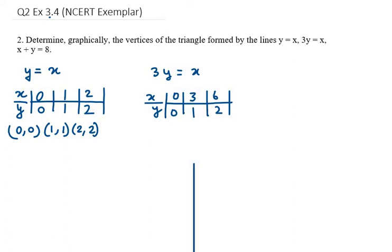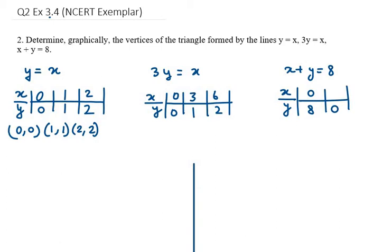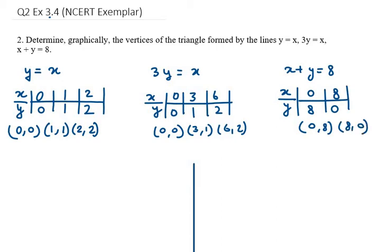Now using the third equation, x + y = 8, we take x as 0 so y will be 8, and if y is 0 then x will be 8. From the second equation we have coordinates (3,1) and (6,2), and from the last equation we have (0,8) and (8,0).